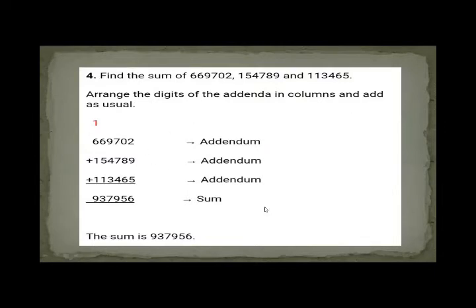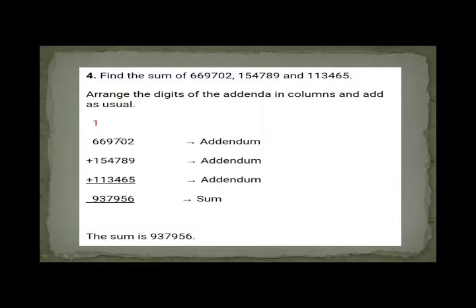The sum here is 5,880,268. Another example: find the sum of 669,702, 154,789, and 113,456. How many addends are given? Three addends. Starting from here: 9 plus 5 equals 14, plus 2 equals 16. Write 6 and carry 1 to the tens place. 8 plus 6 equals 14, plus the carry of 1 equals 15. 7 plus 7 equals 14, plus 4 equals 18.